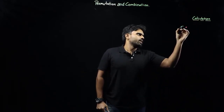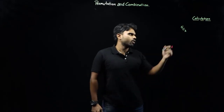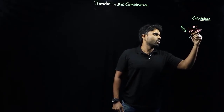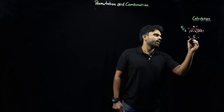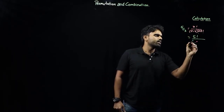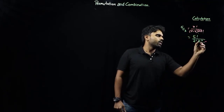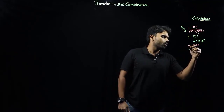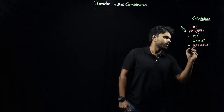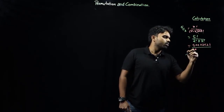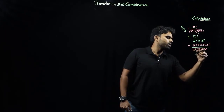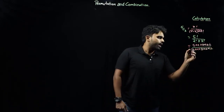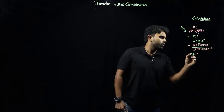Now for calculations: 5C3 = 5! / (2! × 3!). Expanding: 5×4×3×2×1 divided by (2×1) × (3×2×1). Cancel 3×2×1 from top and bottom, and 2×1 cancels too, leaving 5×2 = 10 ways. For higher speed: 7C4 = 7! / (3! × 4!). Cancel 4! directly from 7!, leaving 7×6×5 / (3×2×1). Cancel 3 and 2, giving 7×5 = 35 ways.